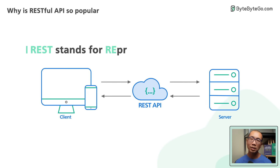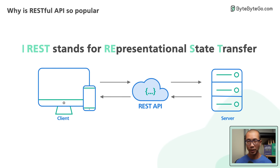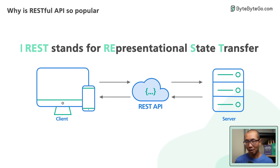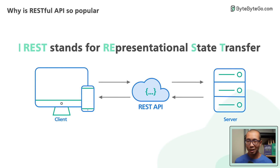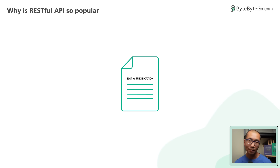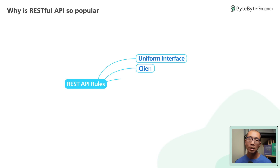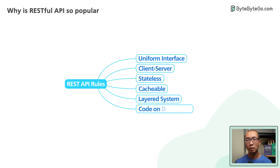REST stands for Representational State Transfer. It is not a specification, but a loose set of rules that has been the common standard for building web APIs since the early 2000s.